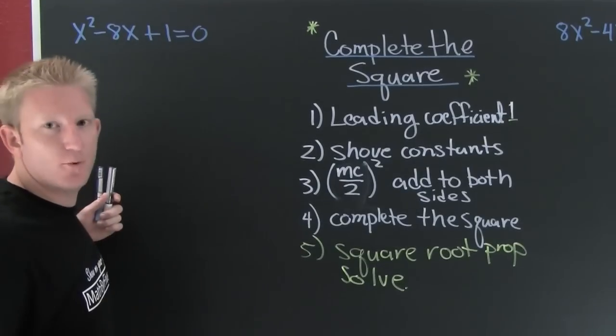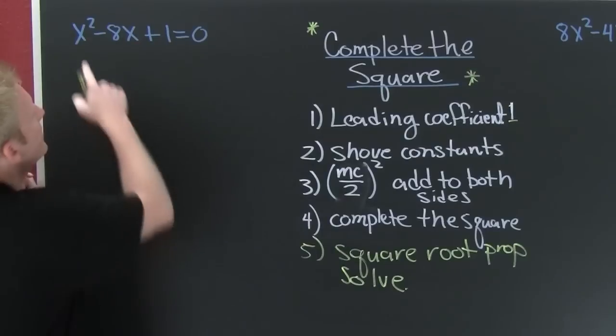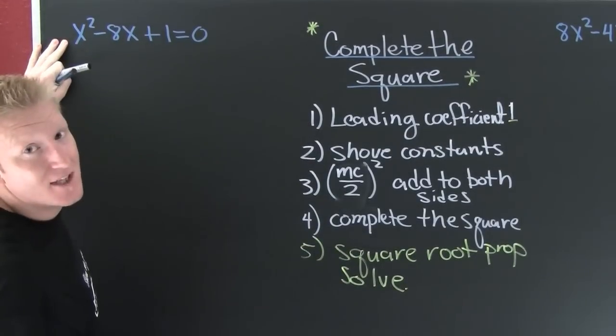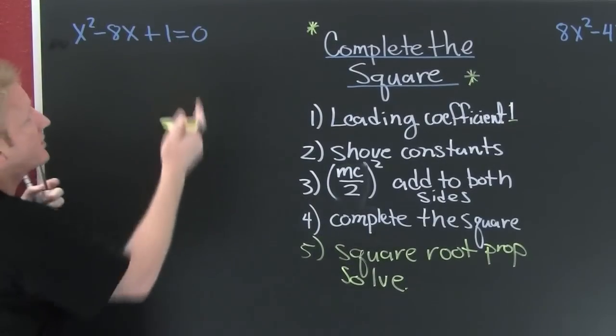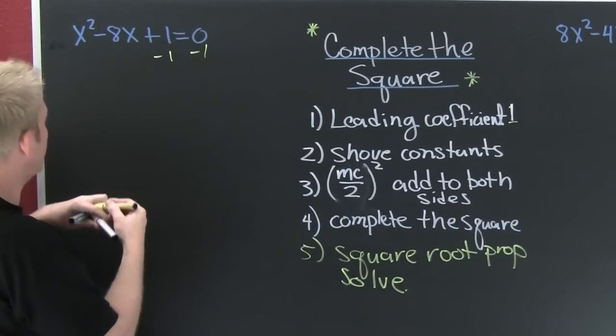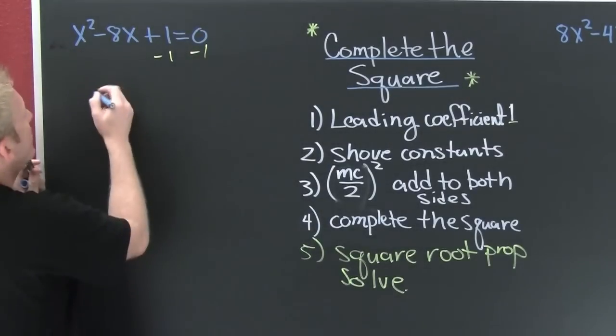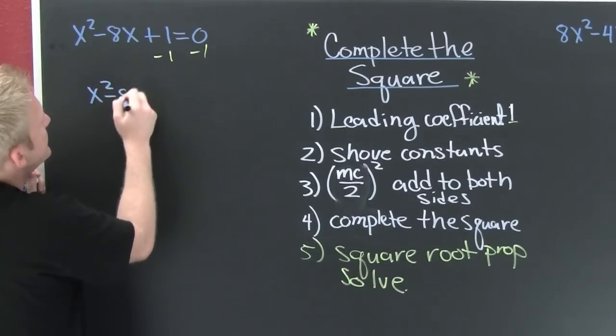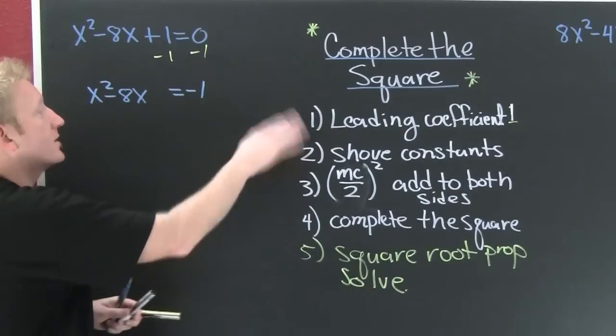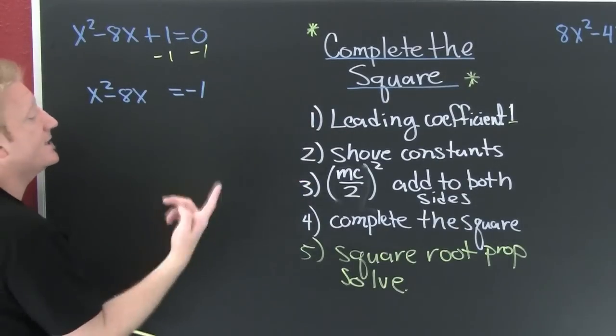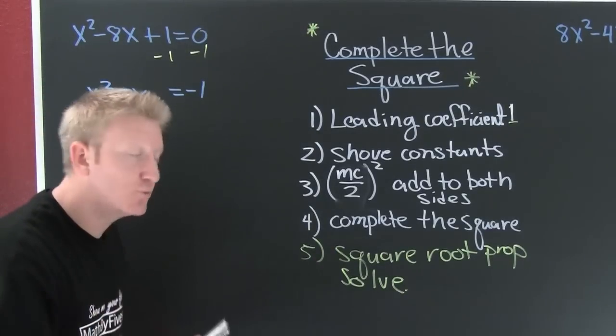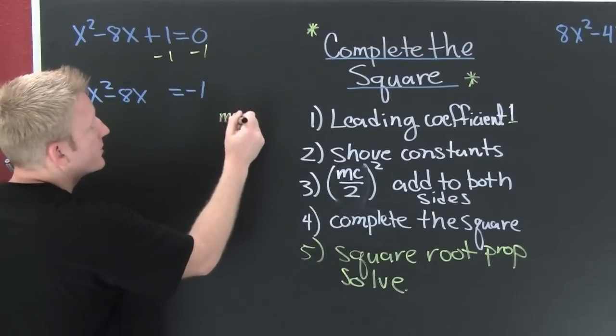For my first example I want to take a look at this guy up here. First I want to get the leading coefficient to be 1. Is it? It is. Check. Next I want to shove the constants. What that means is I need to subtract off that 1 from both sides. So then I'll be left with x squared minus 8x is equal to minus 1. Now the constants are on one side, the variables are on the other. I need to take half the middle coefficient squared and add it to both sides. And I need you to actually do this. Over on the side, what's my middle coefficient?